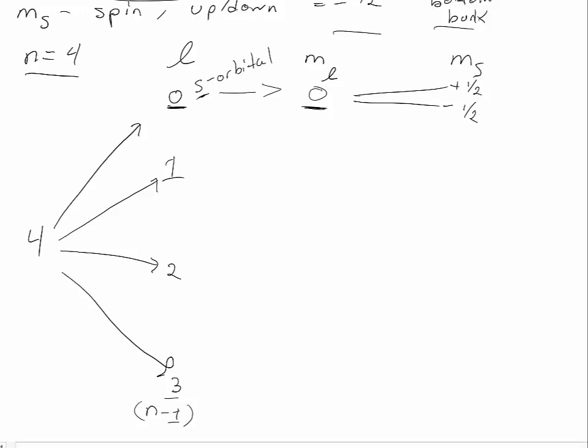When you look at the l of 1 in the fourth shell, just as in all other shells where there are p orbitals, there are three p orbitals. And their l values range from negative 1 to 0 to positive 1. And for each of those, there are two spin values.